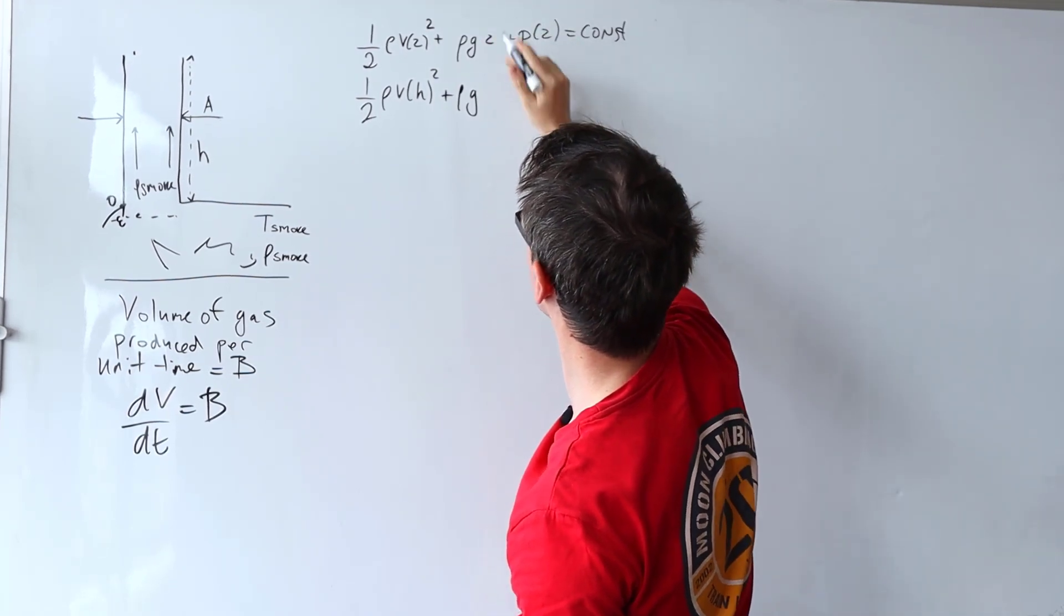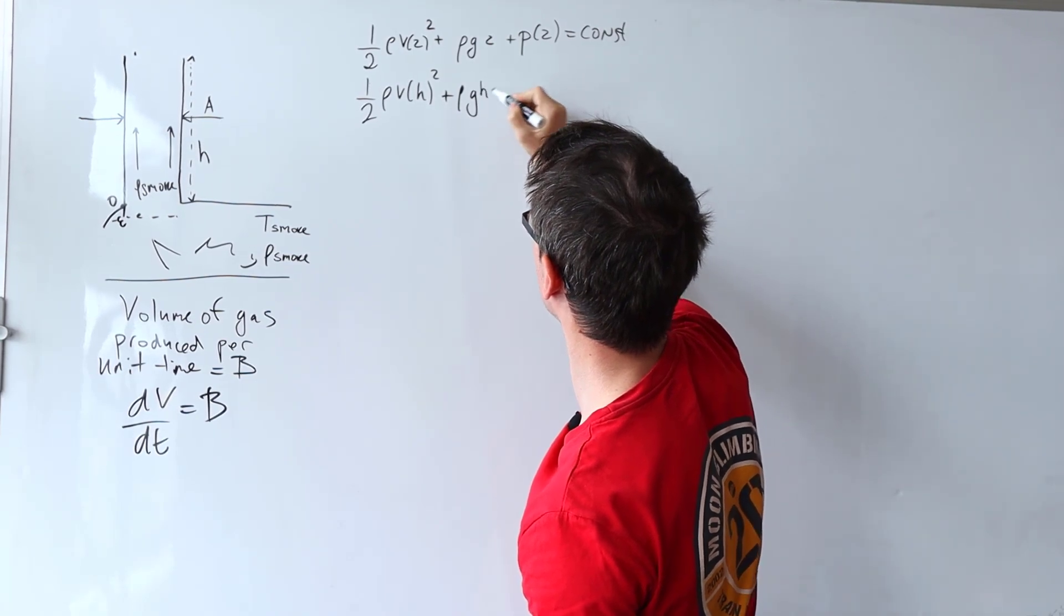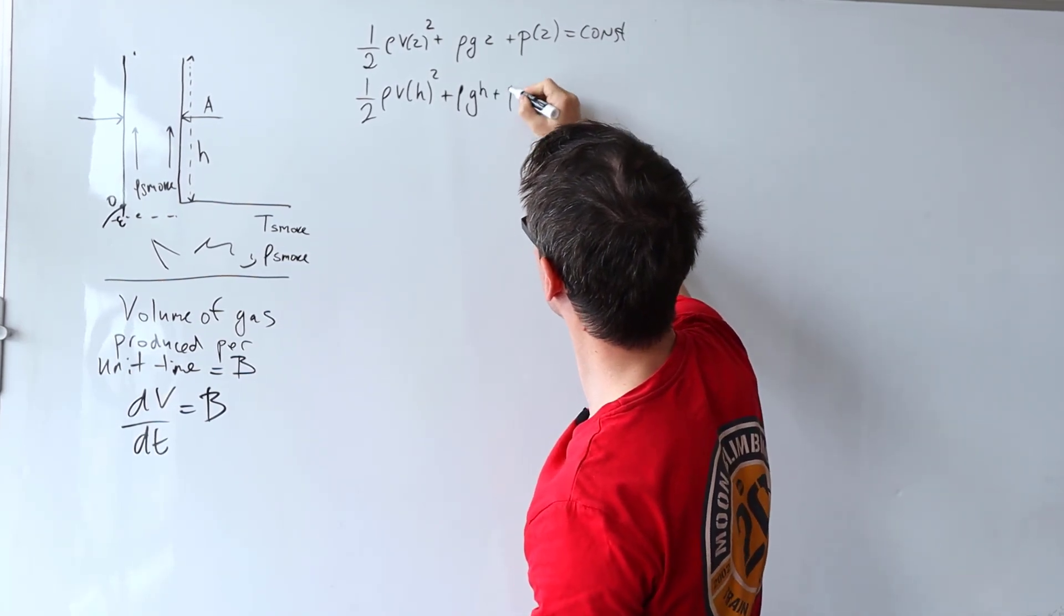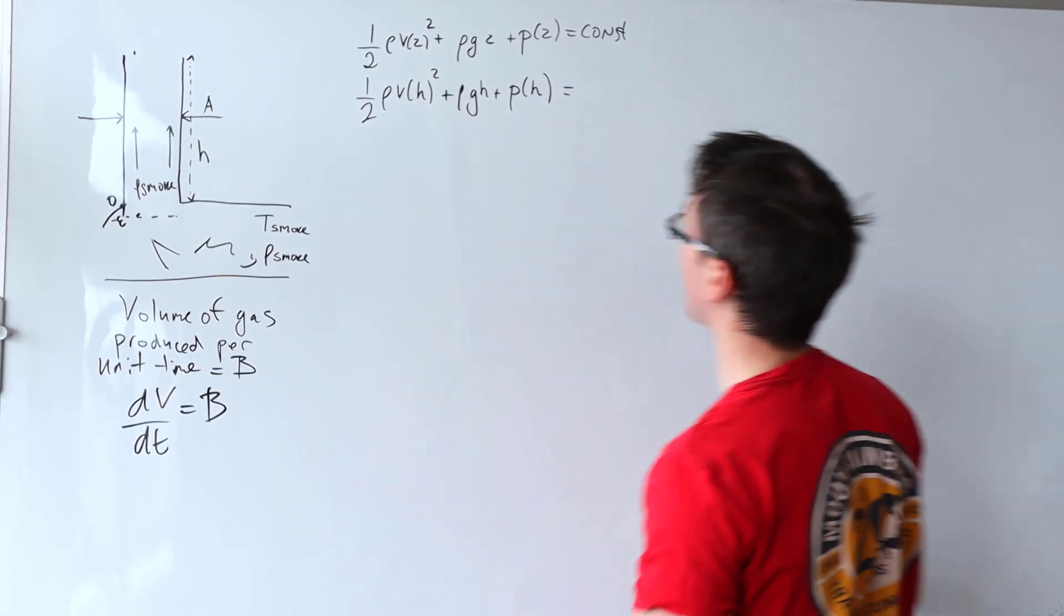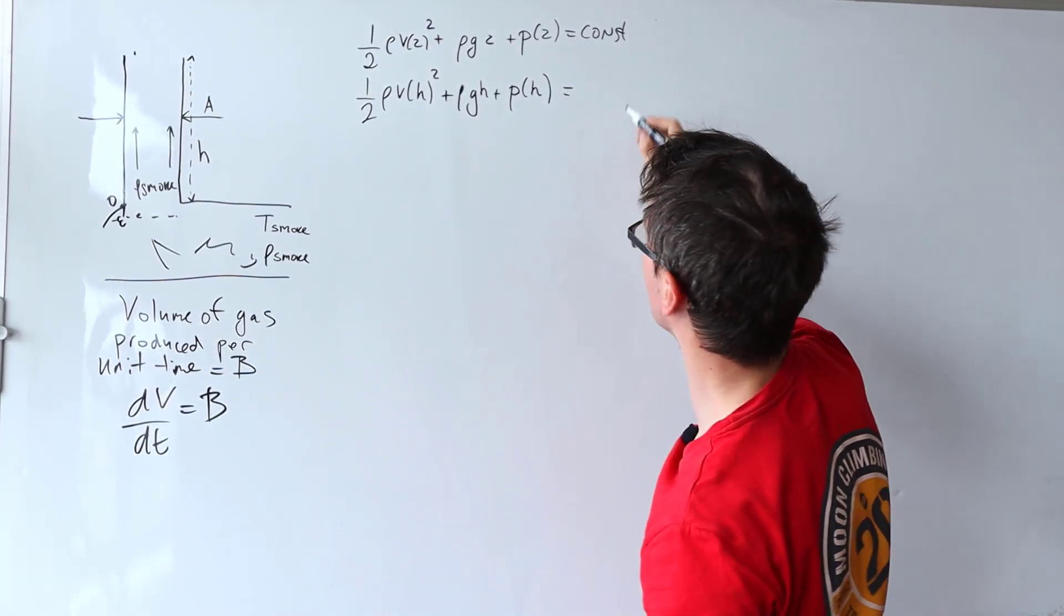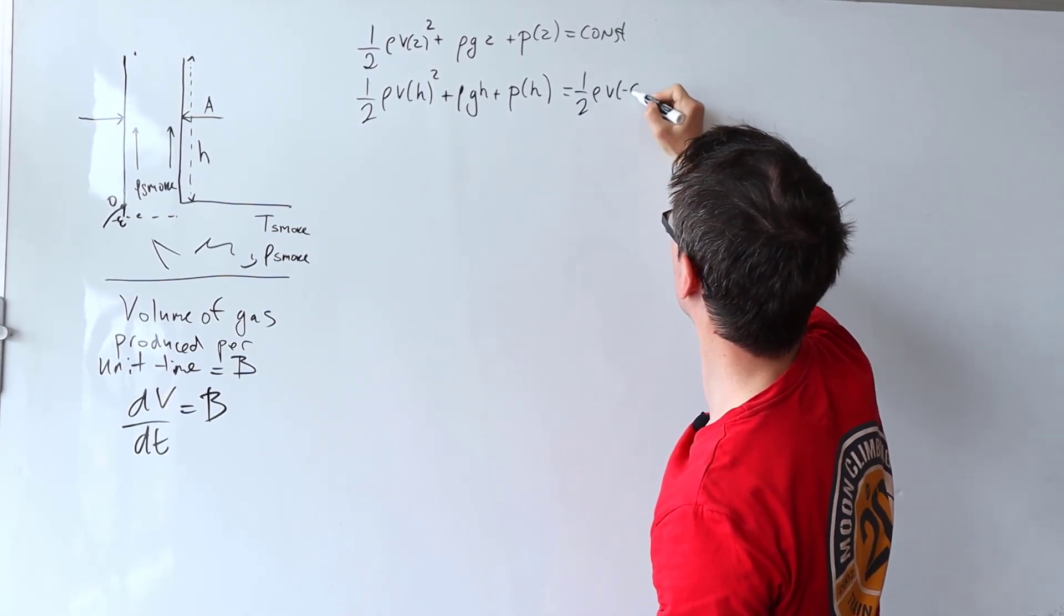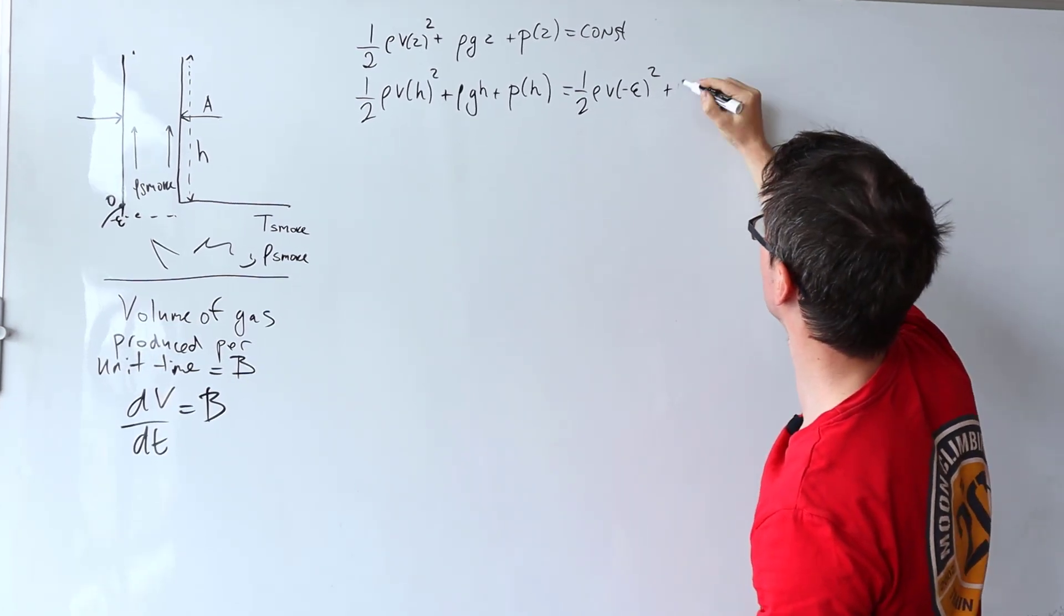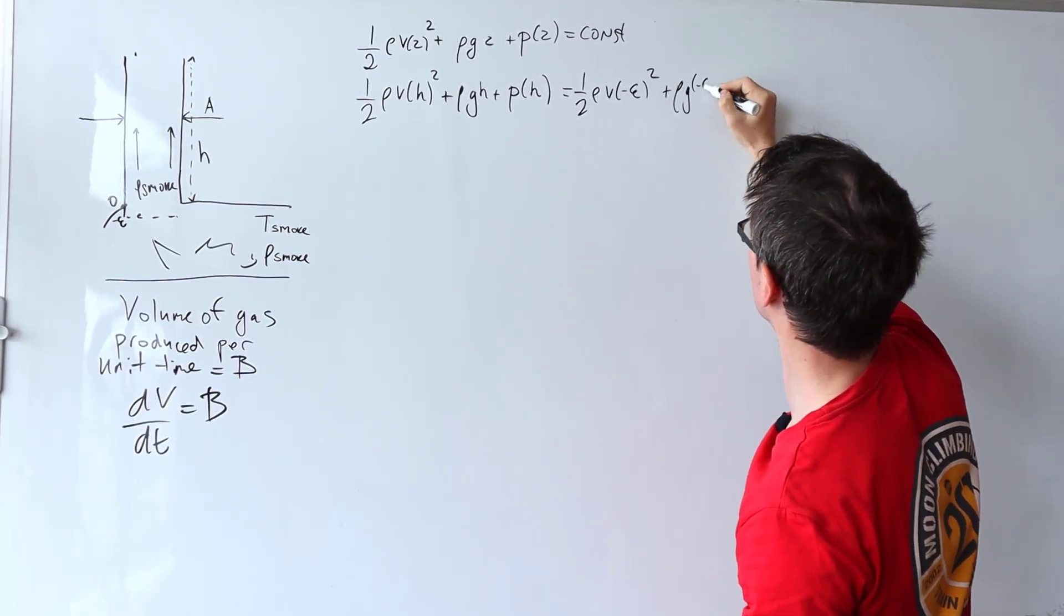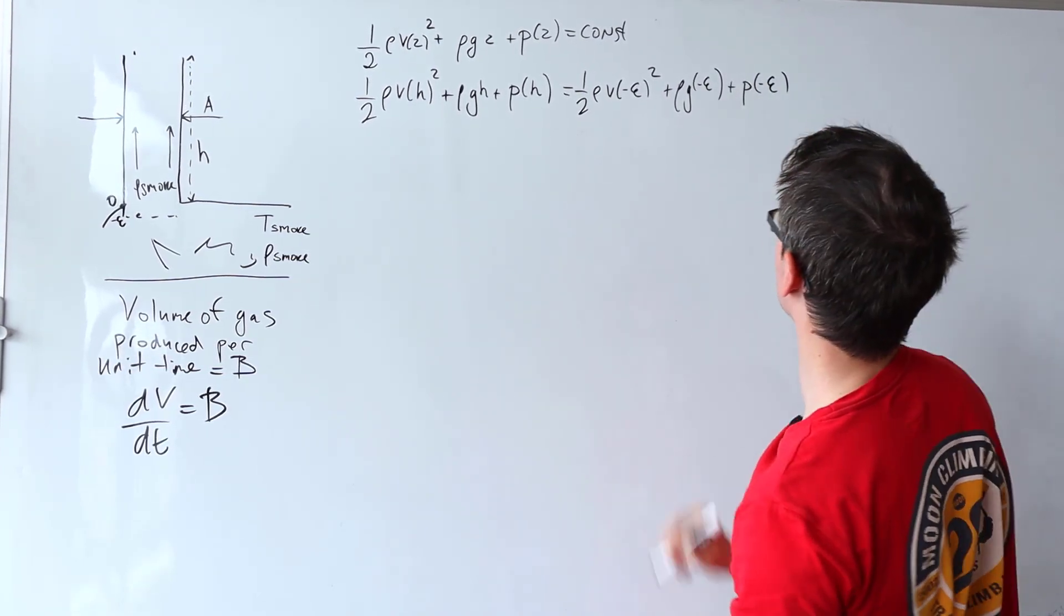This should not be a function, this should just be the height z. So rho times g multiplied by h plus the pressure at height h, and that in turn is going to equal to a half rho V at minus epsilon squared plus rho g at minus epsilon plus p of minus epsilon.